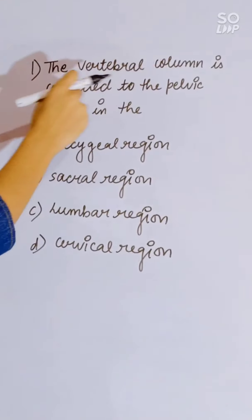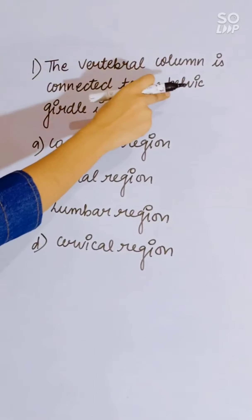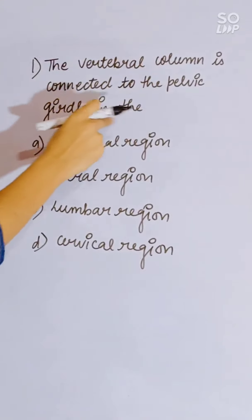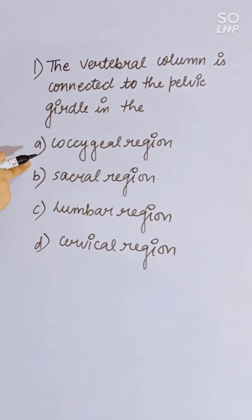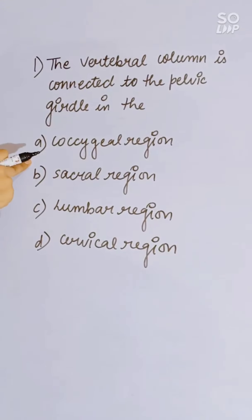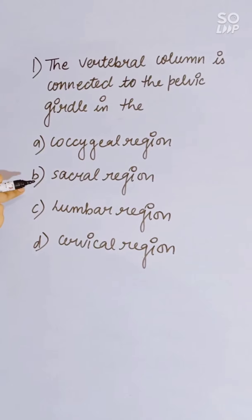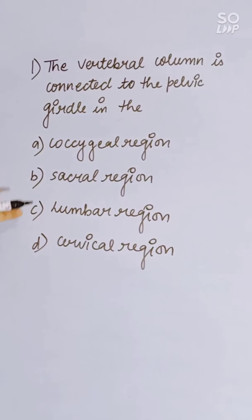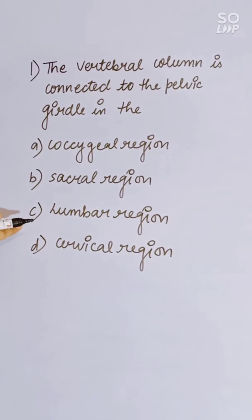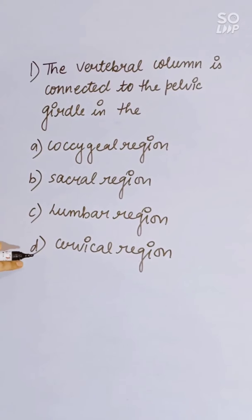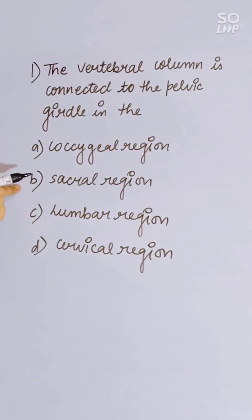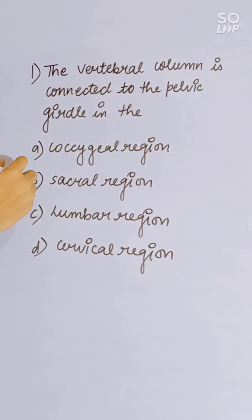The vertebral column is connected to the pelvic girdle in which region? Options: coccygeal, sacral, lumbar, or cervical region. Correct answer is B, the sacral region.